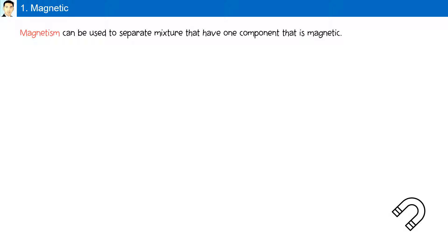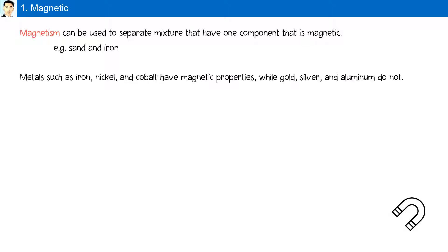Magnetism can be used to separate mixtures that have one component that is magnetic. For example, sand and iron. Metals such as iron, nickel and cobalt have magnetic properties, while gold, silver and aluminum do not. The physical property used to separate these components is magnetism.